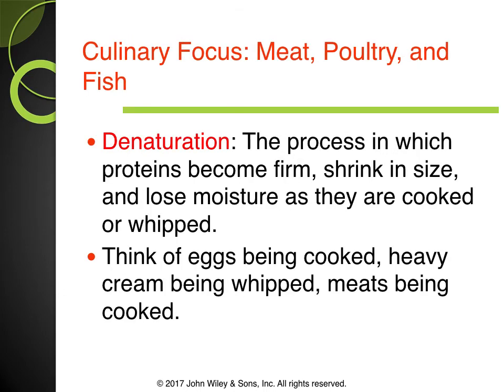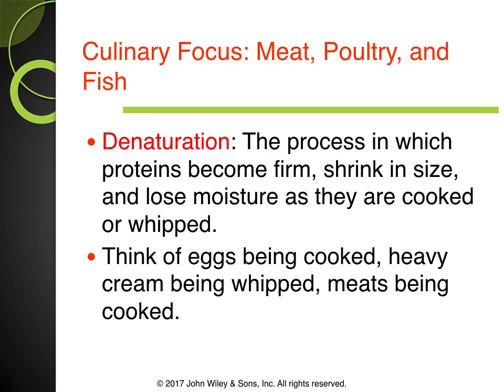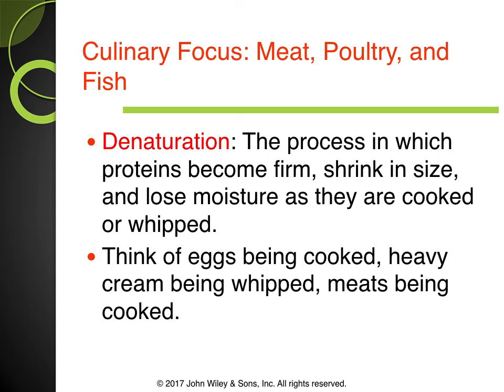We've gone over denaturation — it happens in the body, but it also happens when we cook. It's the process in which proteins become firm, shrink in size, and lose moisture. If you've ever cooked a steak, it goes from not tough to tough after cooking — I personally like medium cooked meat because the texture is still a little softer. Eggs being cooked or heavy cream being whipped is another example of denaturation.